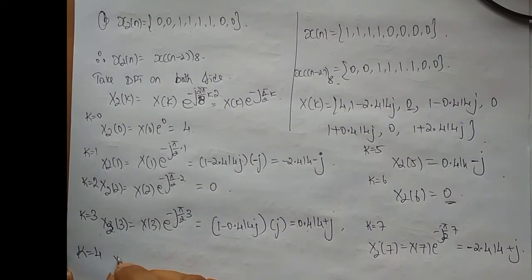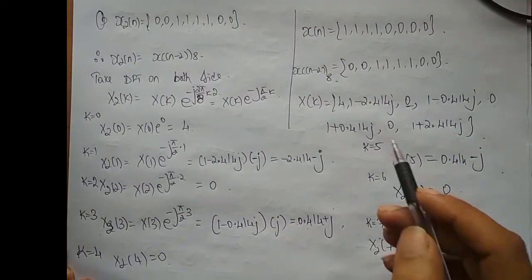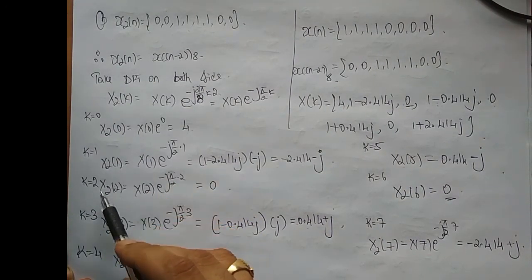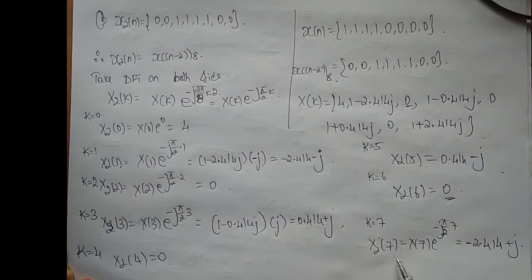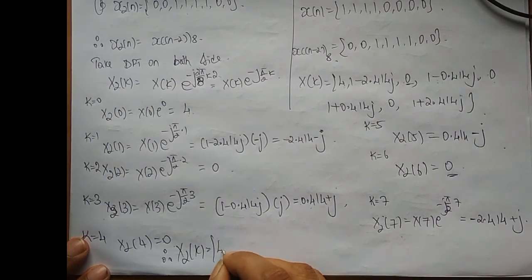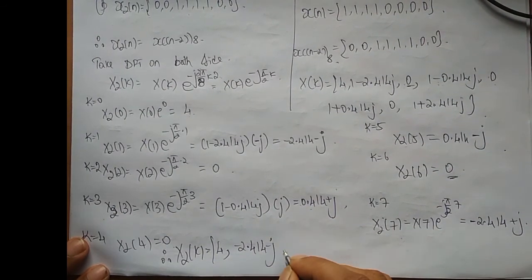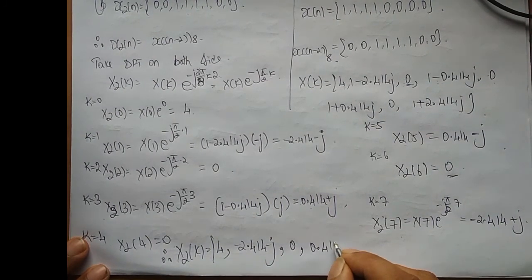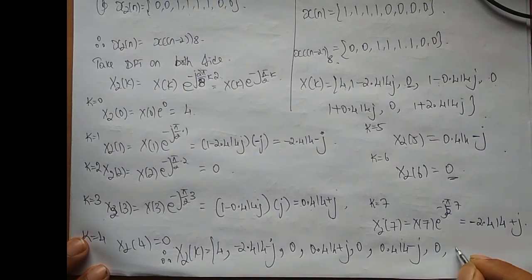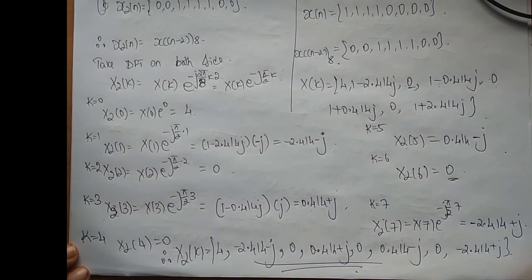If X2[3] = 0.414 + j, then X2[5] is the complex conjugate, which is 0.414 - j. For k = 4: X2[4] = 0, because X[4] = 0. So I have all 8 values. Therefore, X2[k] = {4, (-2.414 - j), 0, (0.414 + j), 0, (0.414 - j), 0, (-2.414 + j)}. This is the DFT of the second sequence.